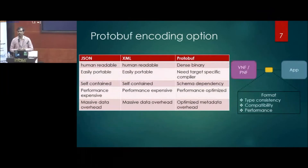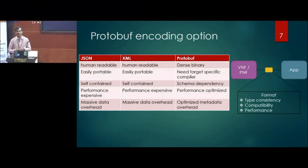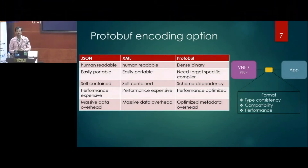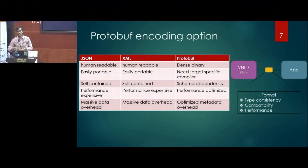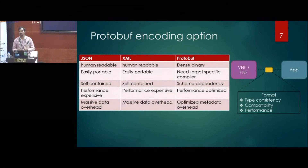Traditionally, with NetConf, RESTCONF, and YANG, we used JSON and XML encoding to make management simpler. But when moving towards streaming telemetry with massive amounts of data, we explored optimizing the encoding from networking devices using binary formats — which are machine-to-machine friendly, avoid overhead, and are faster for transportation. We tried this direction for our network telemetry.